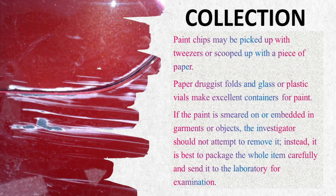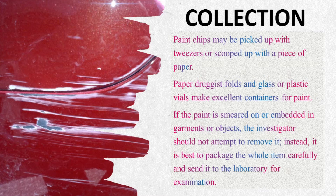As we have already seen, paint chips are most likely to be found on or near people or objects involved in hit-and-run incidents. The recovery of loose paint chips from a garment or from the road surface must be done with utmost care to keep the paint chip intact. Paint chips may be picked up with tweezers or scooped up with a piece of paper. Paper druggist folds or glass or plastic vials make excellent containers for paint. If the paint is smeared or is embedded in garments or objects, the investigator should not attempt to remove it.